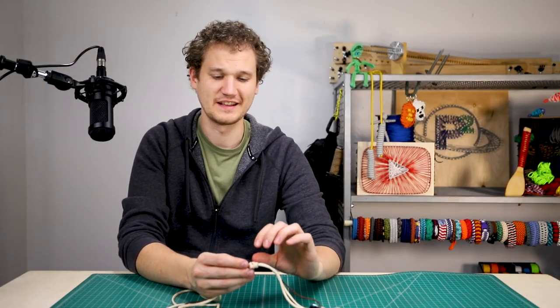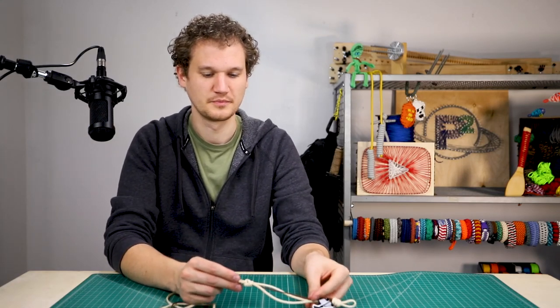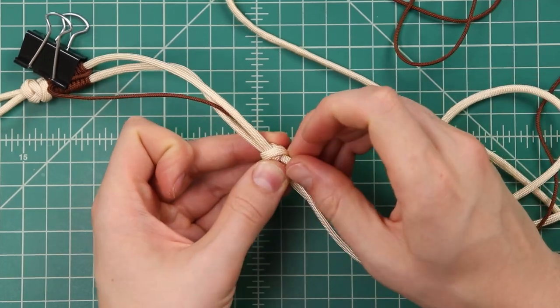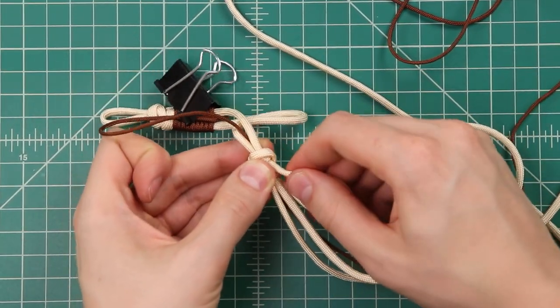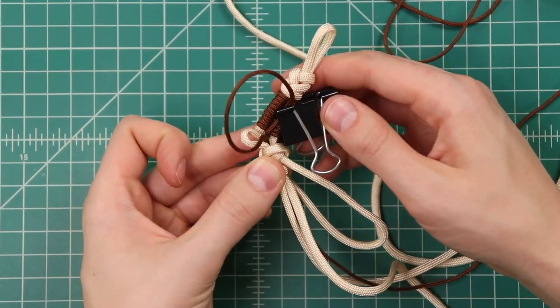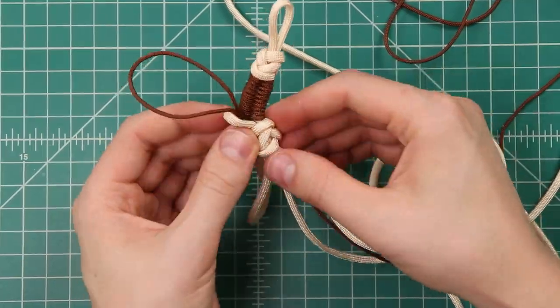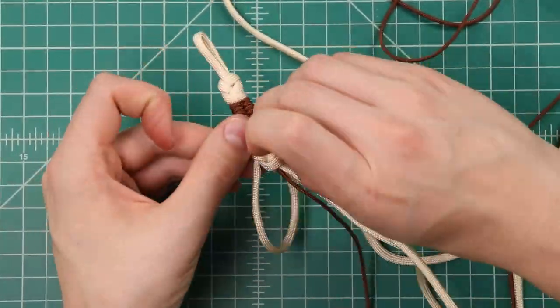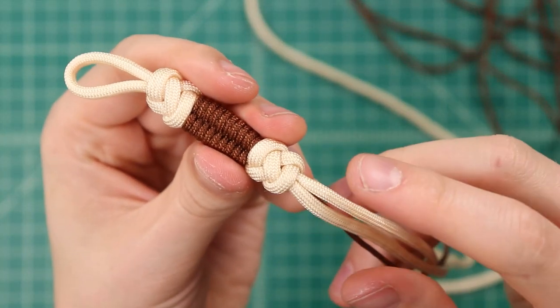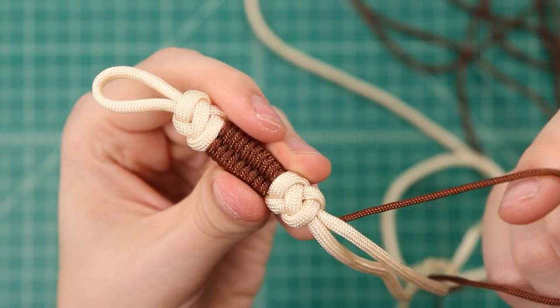I find that it works best to tighten the knot down just about all the way before adjusting it to where we want it to be. So I'll do just that. Just taking one cord at a time and pulling it all the way down. You might need to take your binder clip off at this point. Once that knot is tightened down to where it needs to be, and the extra slack from the brown cord is pulled through, we can start with the fishtail again.